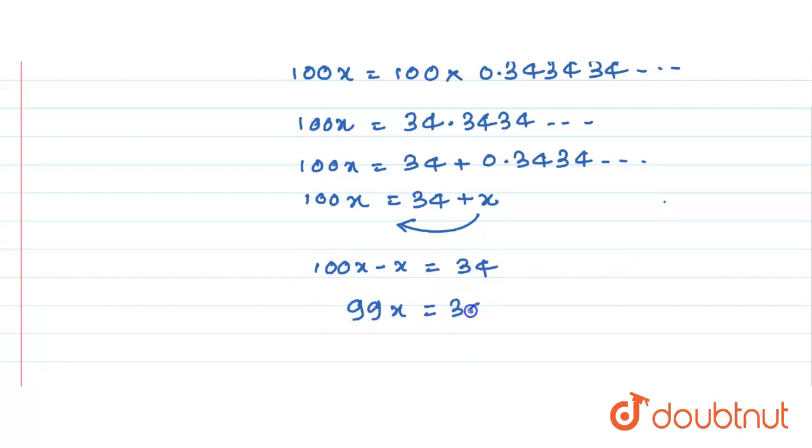99x equals 34. Therefore, x equals 34 divided by 99. So 0.34 bar can be written as 34 by 99. Hope you got this. Thank you.